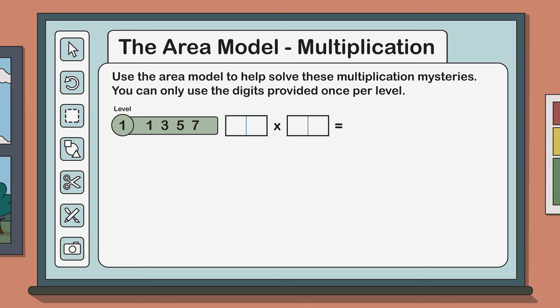Now the answer to this multiplication number sentence is a three digit palindrome, 555. A palindrome is a number that reads the same forward and backwards.